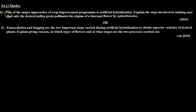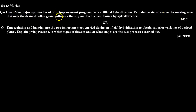The first type is: one of the major approaches of crop improvement program is artificial hybridization. Explain the steps involved in making sure that only the desired pollen grain pollinates the stigma of a bisexual flower by a plant breeder.